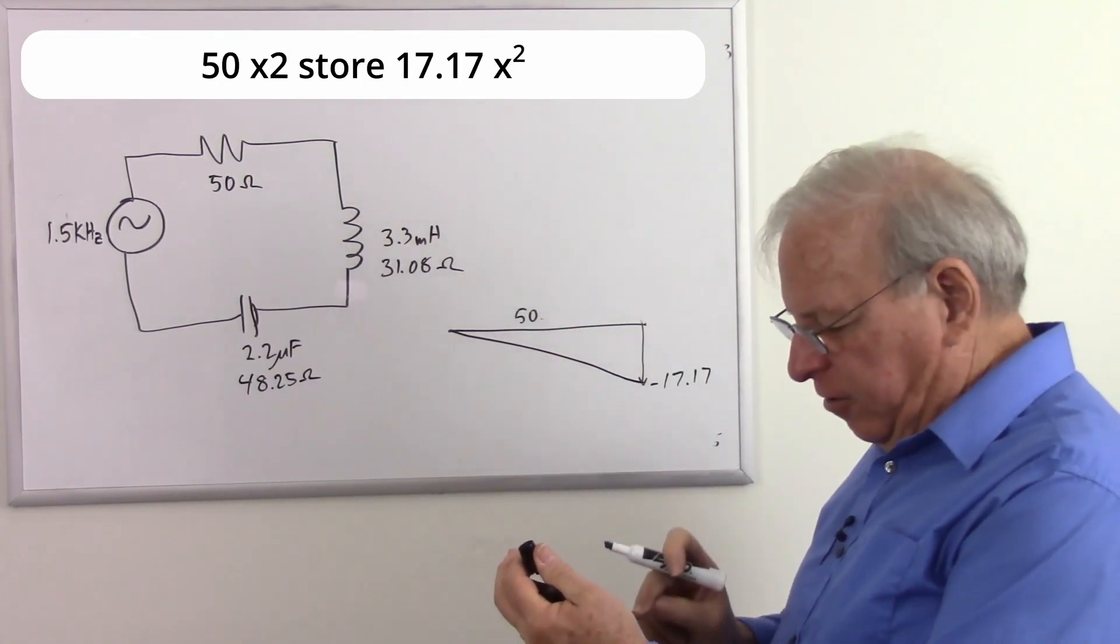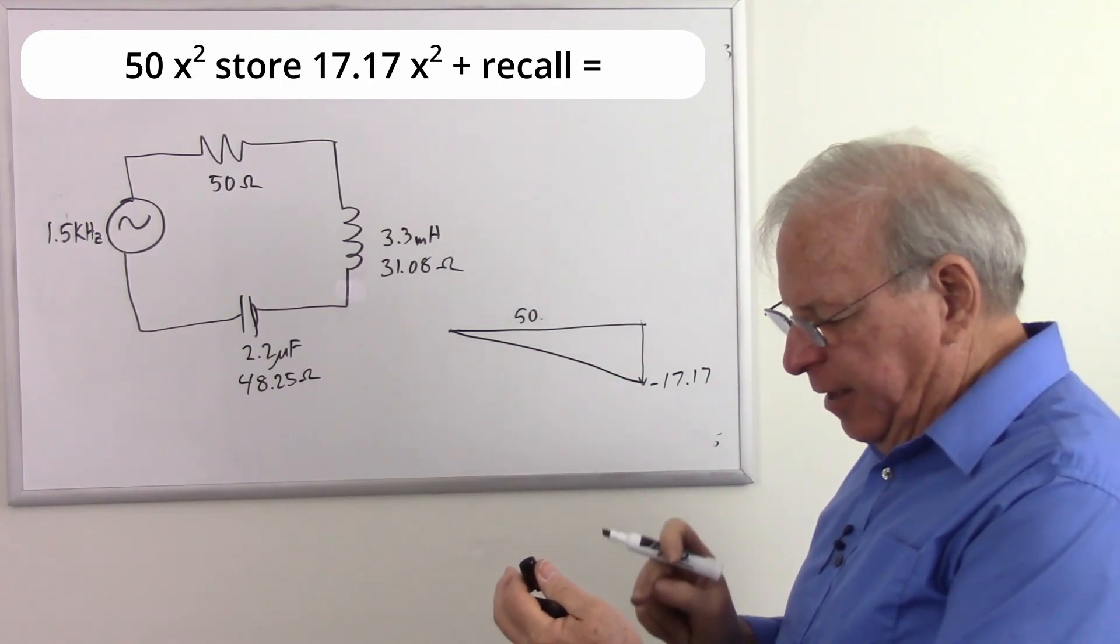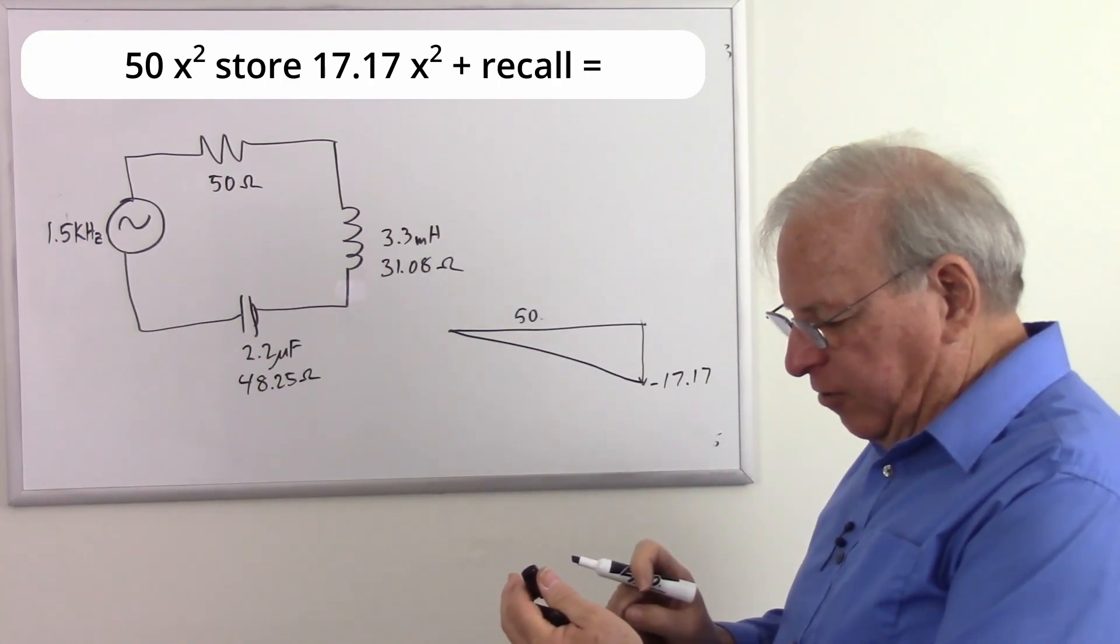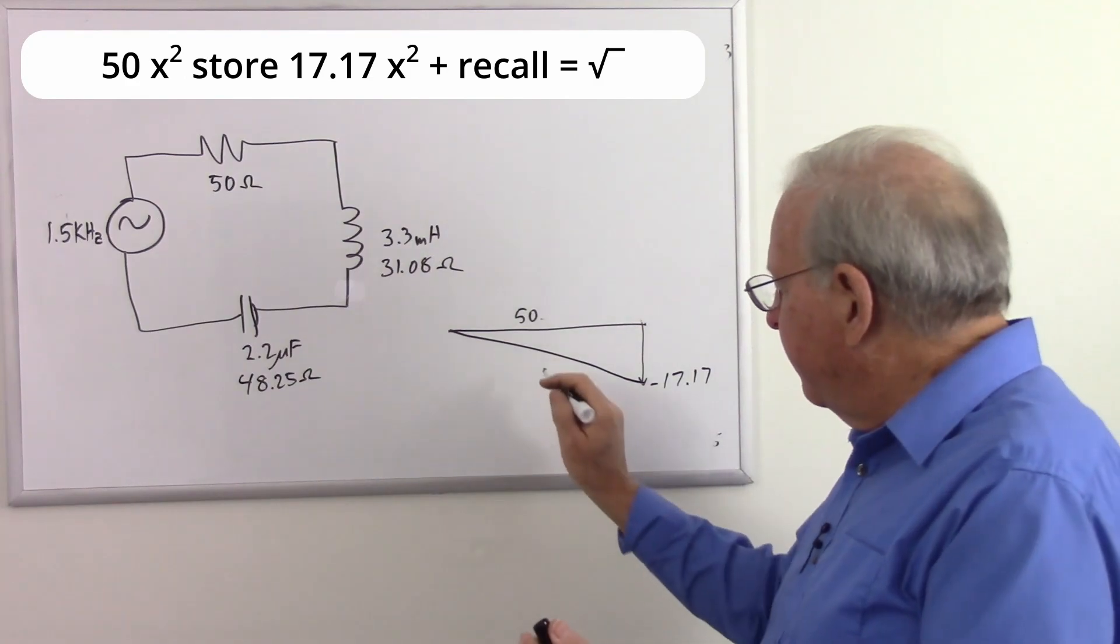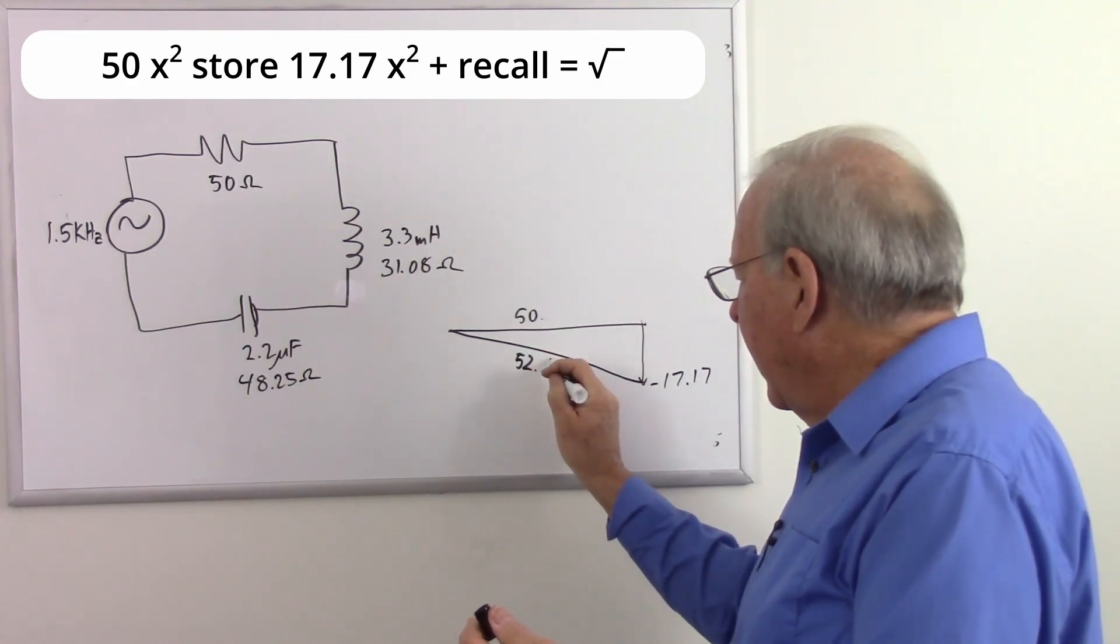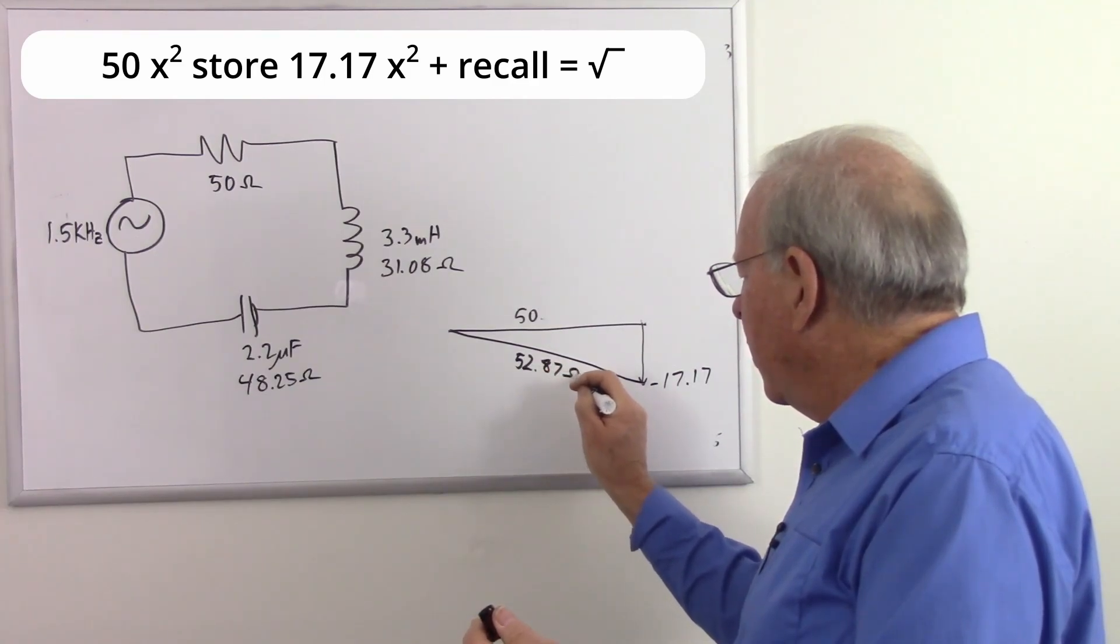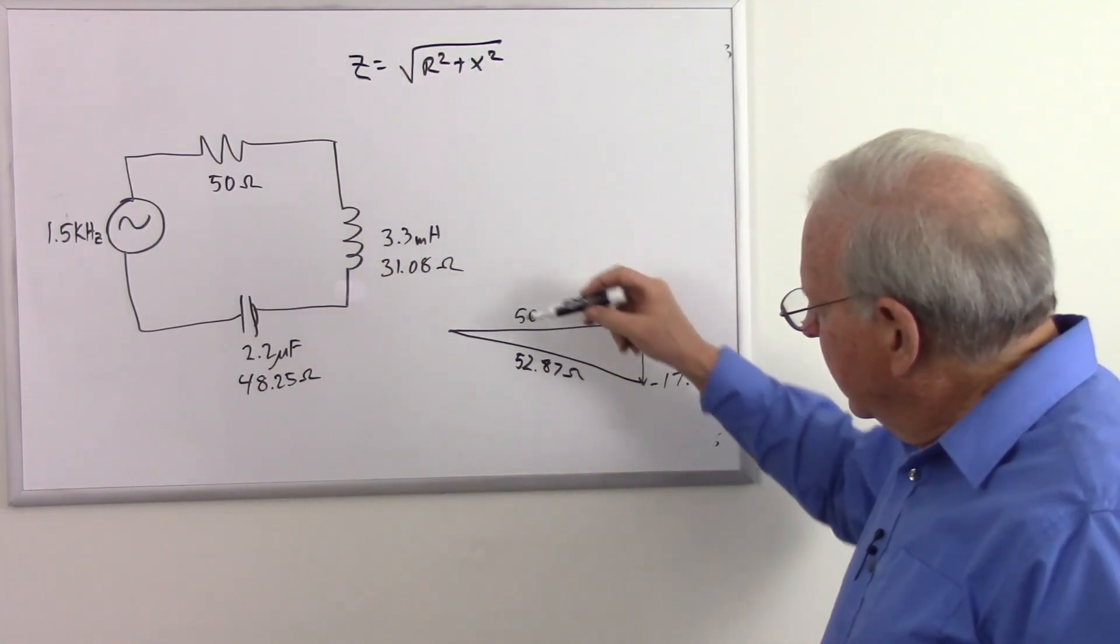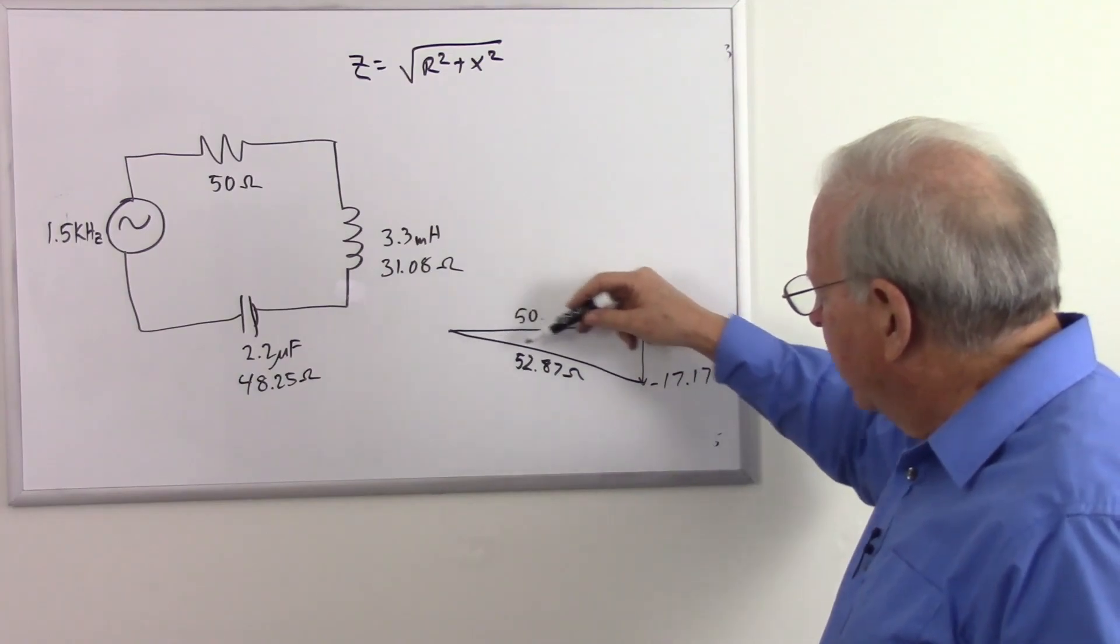Square that, add it to the square of the resistance, and I got a number that I take the square root of. And I got 52.87 ohms. I rounded that properly. 52.87 ohms of impedance.